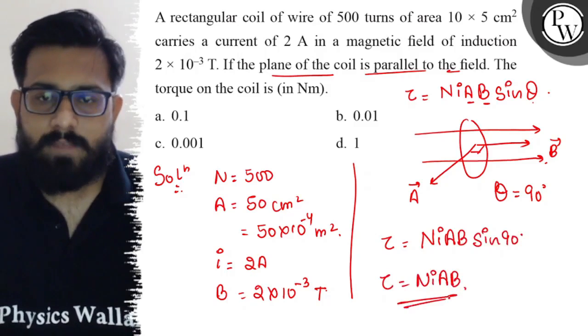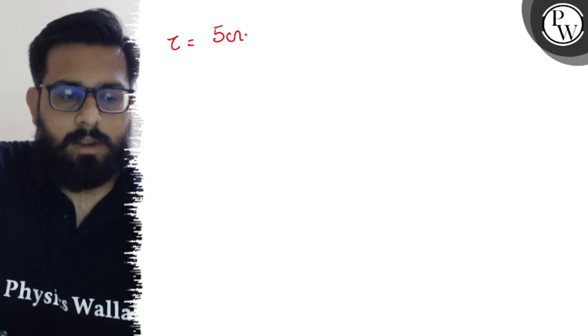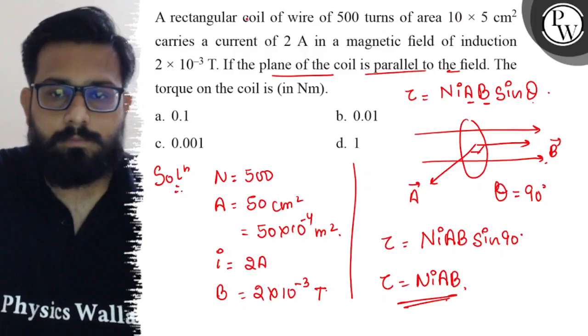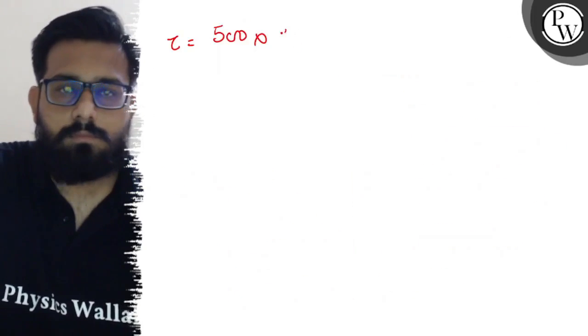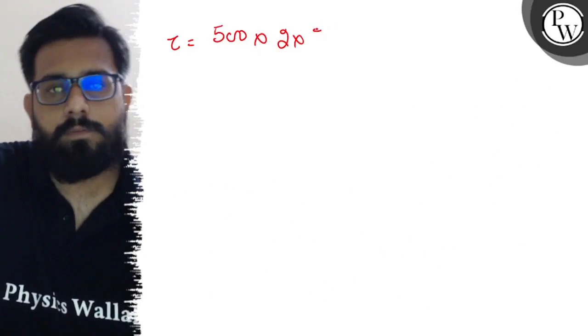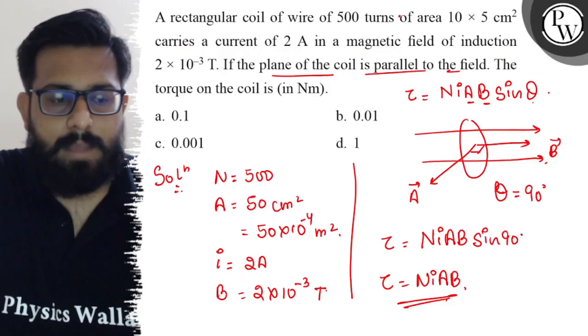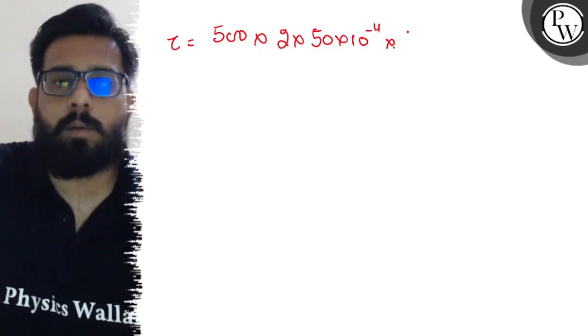Now just put the values, let us solve this on the next page. Number of turns is 500, into current is 2 amperes, into area is 50 × 10⁻⁴, into the value of the magnetic field is 2 × 10⁻³.